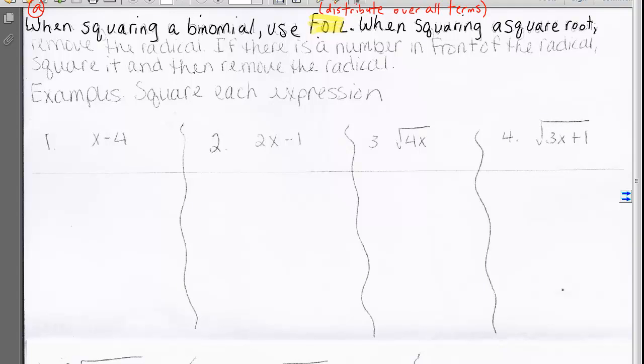Type A: When squaring a binomial, use FOIL or distribute over all terms. Type B: When squaring a square root, remove the radical. And type C: If there is a number in front of the radical, square it and then remove the radical.